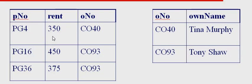I forgot to mention one more thing. I wanted to mention the primary keys and foreign keys. So here in this new table — this 3NF table — we have a property table and we have an owner table. The primary keys, let's do first. Hopefully you figured out property number is a primary key. It's unique.